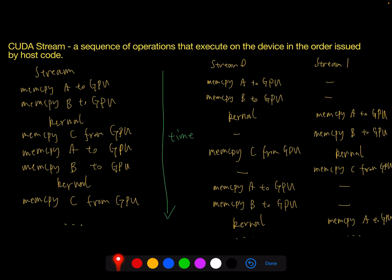Now I'm going to introduce CUDA streams. A CUDA stream is a sequence of operations that is executed on the device and issued by host code. As mentioned in previous examples, if we don't specify a stream in the CUDA program, we still use the default stream zero. What happens in the previous example is that all the operations we define are added into a single stream.